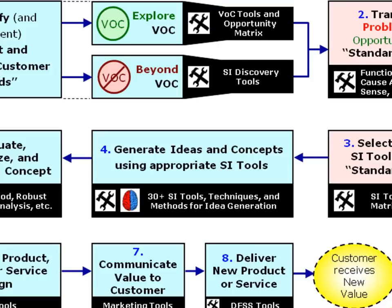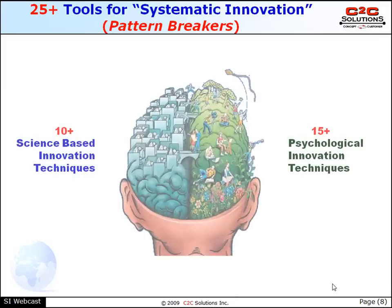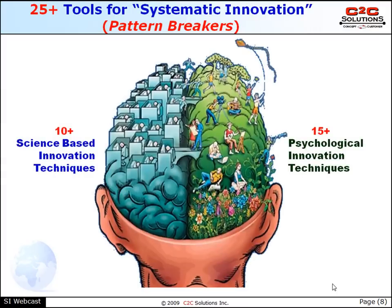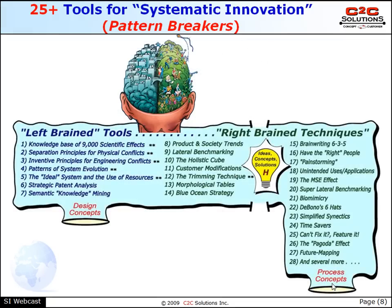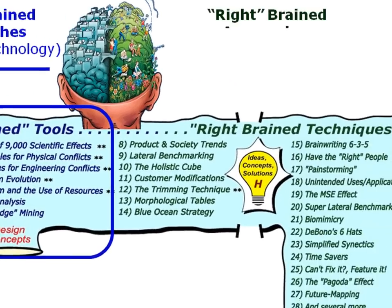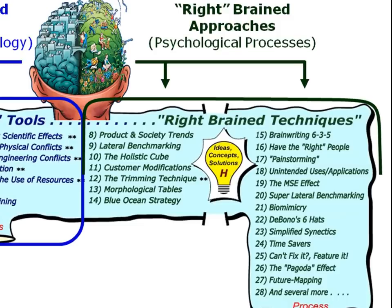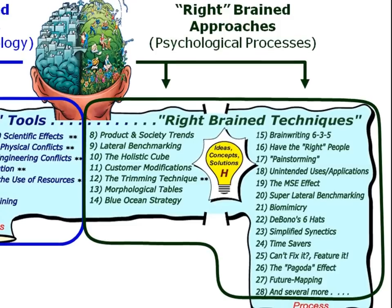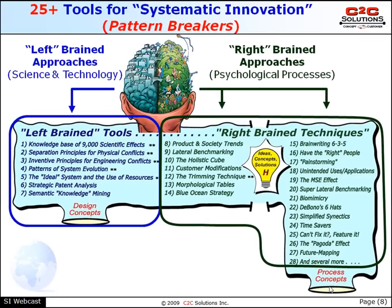With well over 25 practical tools and techniques, this is the heart of the innovation process, and we could easily spend several hours here. In fact, in our workshops, we spend a minimum of 8 hours on this step alone. These innovation tools come from over 12 years of innovation research. We loosely categorize these tools and methods into a left brain category, based on science and technology, and a right brain category, based on psychology. Combined, there are over 30 methods.